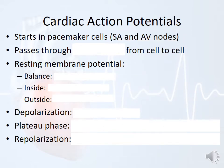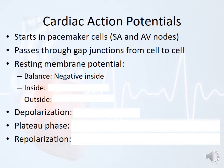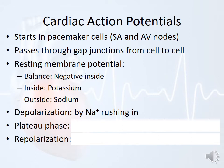Cardiac action potentials start in pacemaker cells — the SA node (sinoatrial node) and the AV node (atrioventricular node). These are small collections of cells in the heart that set the pace and depolarize on their own without any help from the nervous system. Once started, the action potential passes through gap junctions from cell to cell. Resting membrane potential is similar — negative on the inside, with lots of potassium inside and lots of sodium outside, just like skeletal muscle or a neuron. Depolarization in cardiac action potentials is also caused by sodium rushing in, just like in skeletal muscle.